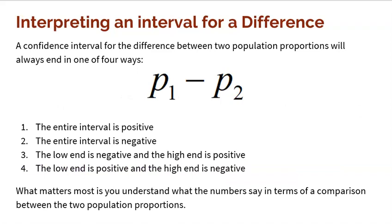Now let's talk about interpreting an interval for a difference. A confidence interval for the difference between two proportions — P1 minus P2 — means that only four things can happen. That difference could only produce an interval of four options: either the entire interval is negative, the entire interval is positive, the low end is negative and the high end is positive, or the low end is positive and the high end is negative.